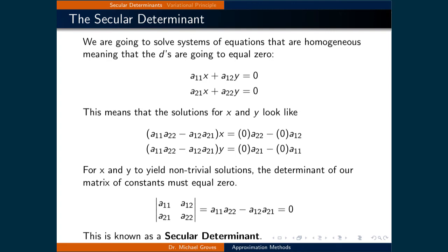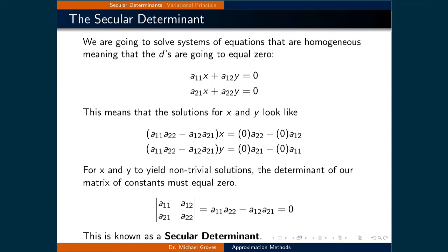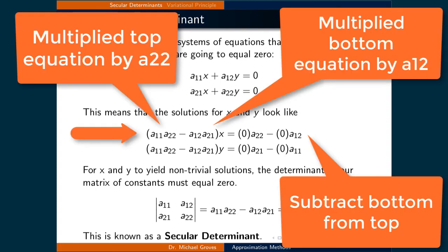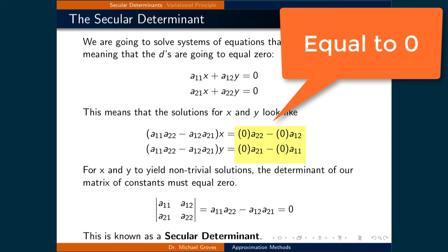For this course, we're going to solve systems of equations that are homogeneous, meaning the d's equal 0. This changes our system to a11x plus a12y equals 0, and a21x plus a22y equals 0. The solutions become (a11a22 minus a12a21) times x equals 0, and (a11a22 minus a12a21) times y equals 0.